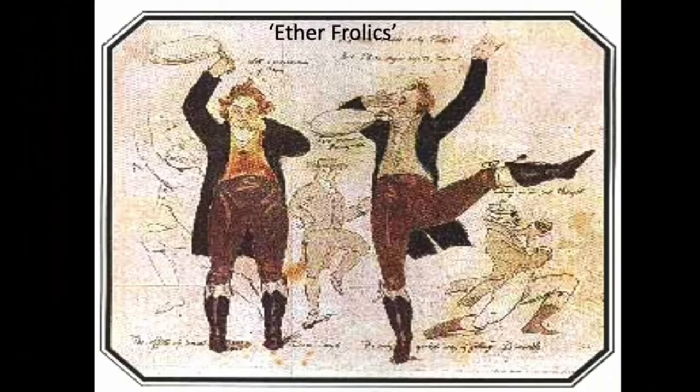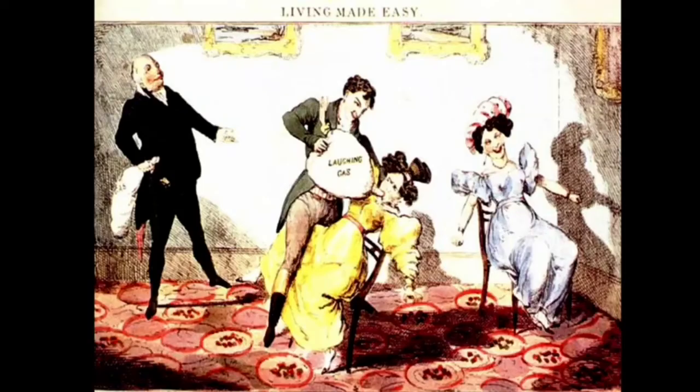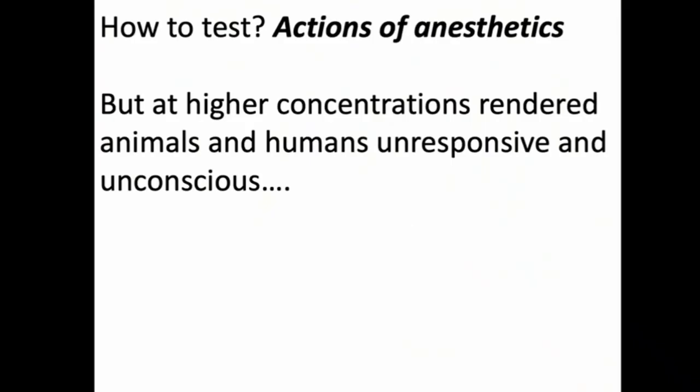During the 19th century, a group of gases were discovered which, when inhaled at low concentrations, caused euphoria. So these are ether frolics — guys sniffing ether and getting high and giddy and dancing around — and also laughing gas, nitrous oxide, was very popular. But when you go to higher concentrations, these rendered humans and animals unresponsive and unconscious.